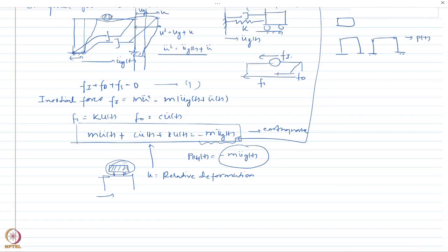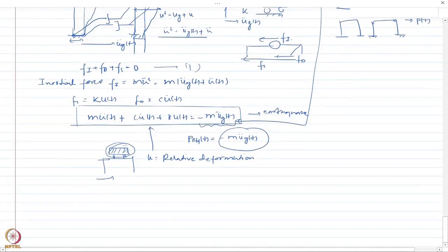A very heavy mass attracts a very large earthquake force. If that heavy mass is distributed over a larger footprint, the earthquake force on individual components is relatively less. We have considered external force P(t) and also considered the earthquake case, where the effective force is -m*u_g_double_dot, and u here is the relative deformation with respect to the base of the structure. In subsequent chapters we will deal with how to solve this equation of motion.